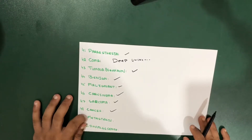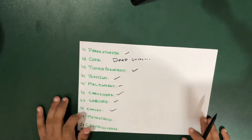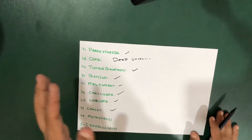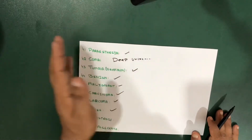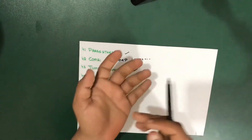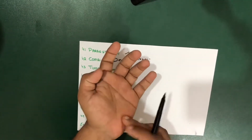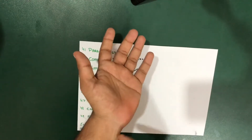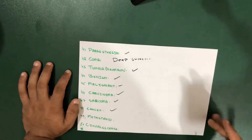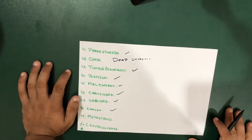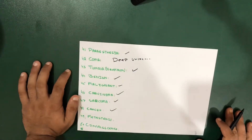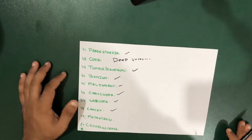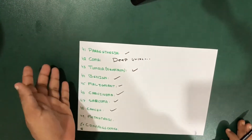Now I'll talk about metastasis. Metastasis is very simple — it's the spread of a local disease like cancer cells to a distant part of the body. If you have cancer and don't treat it soon, it can transfer through the bloodstream to the whole body. So that is called metastasis.